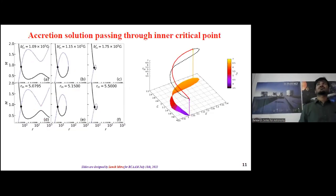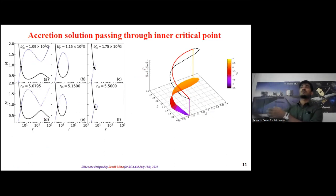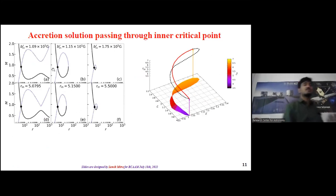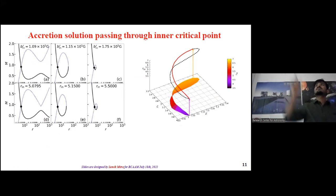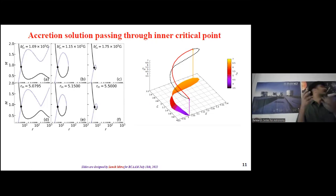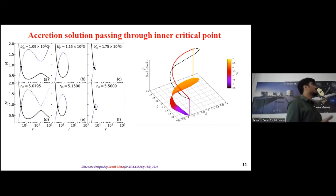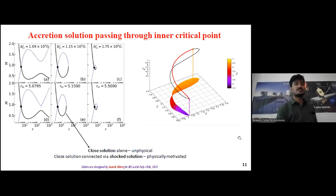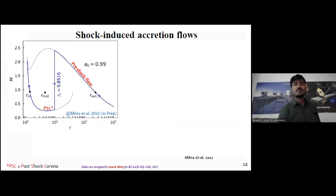Focusing on accretion solutions passing through the inner critical points: starting from the inner critical point and changing the magnetic field strength at that point, we find two distinct domains of B_R. Within a certain magnetic field strength range there exist closed accretion solutions. The 3D parameter space (for given E and angular momentum) shows the closed parameter space. These closed solutions are unphysical because they are not connected to the outer edge of the disk — we need a physically motivated outer-passing supersonic branch that connects with this closed solution via a shock.